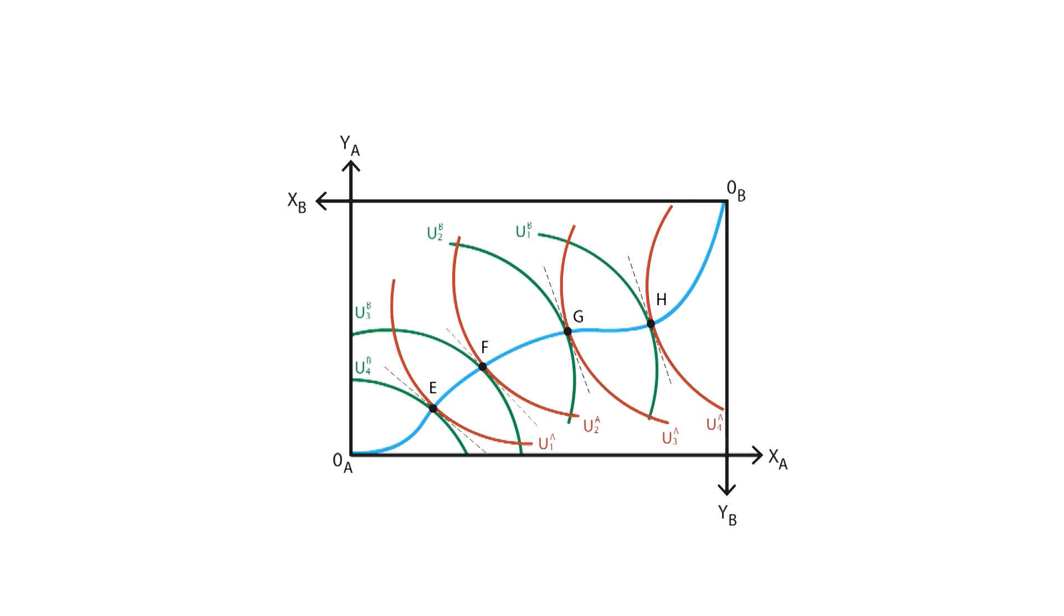This means all allocations outside the contract curve can be improved. For instance, take point I. The first thing we notice is that at this point, the marginal rates of substitution, which for each indifference curve are equal to their slope, are not equal to each other. Indeed, point I corresponds to the third indifference curve for consumer A and the first indifference curve for consumer B.